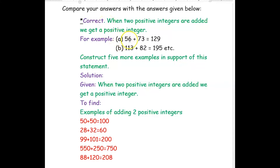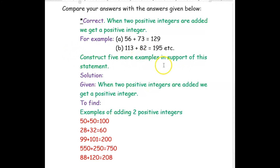For example, 56 plus 73: both are positive integers, so if you add 56 and 73 we get 129, which is also a positive integer. Similarly, 113 plus 82 gives 195. So if you add two positive integers you get a positive integer — this statement is correct. Now construct five more examples in support of this statement.